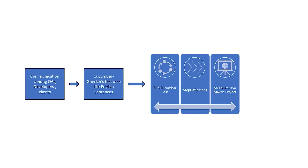This is a quick flow diagram of what we just described. In BDD testing, we first have communication between the QAs, developers, and clients. This will then be communicated into Cucumber Gherkin test cases using simple English language. After that, we set up our Cucumber tests, and then from the Cucumber test classes we will use step definition classes to relay the information to our Selenium Java Maven project. Essentially, the step definitions in the middle communicate between the different parts of our project.